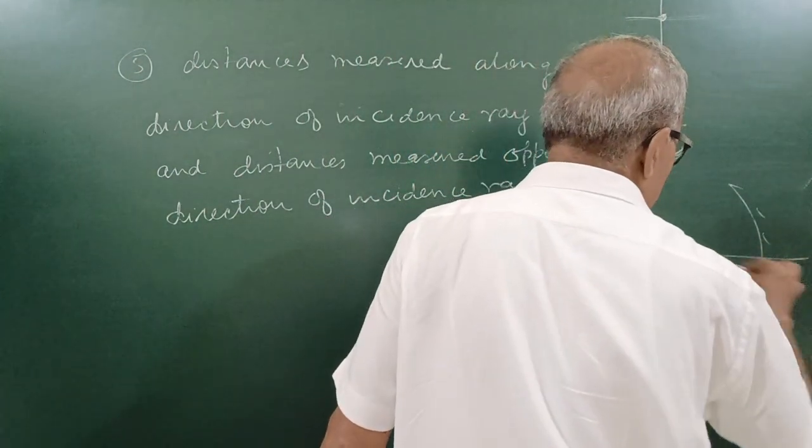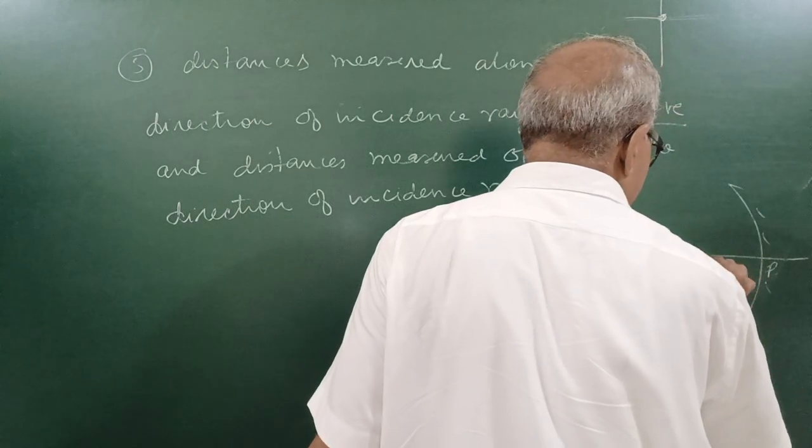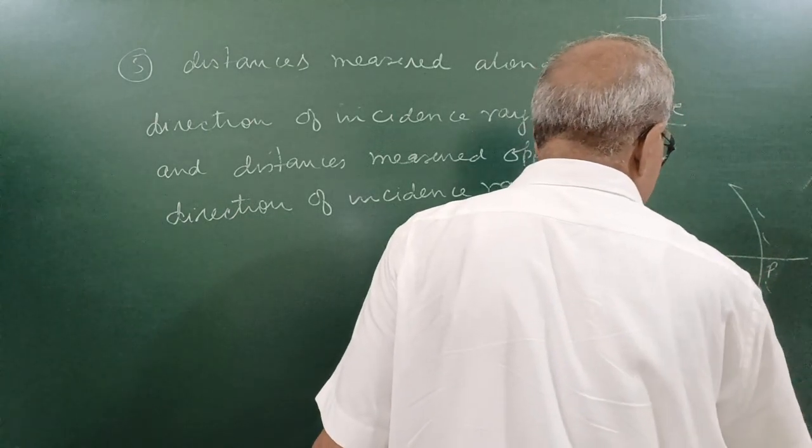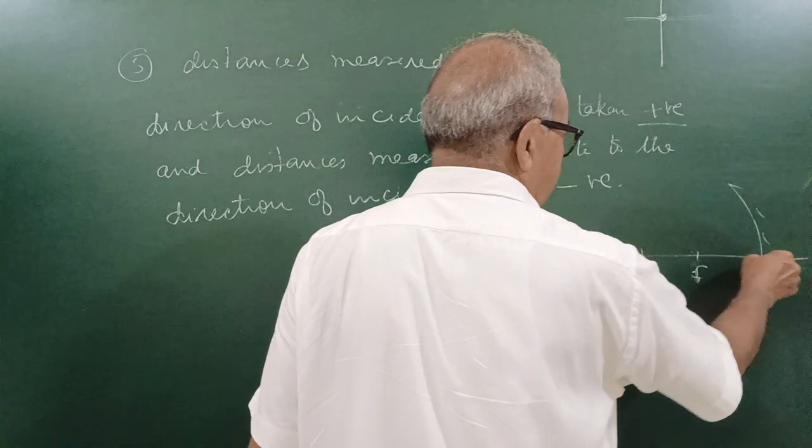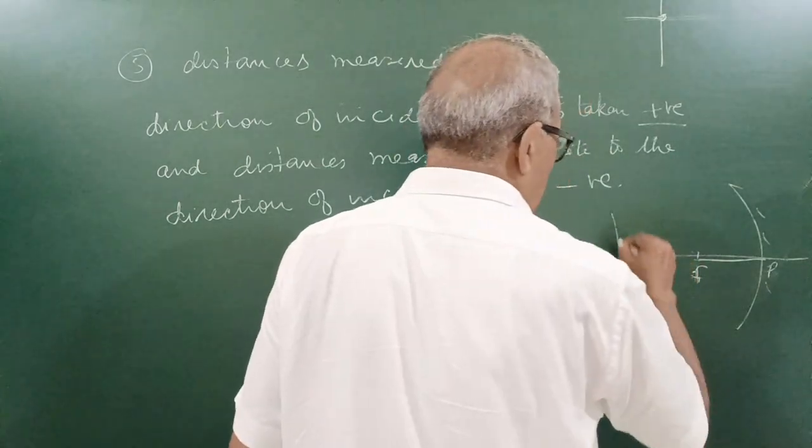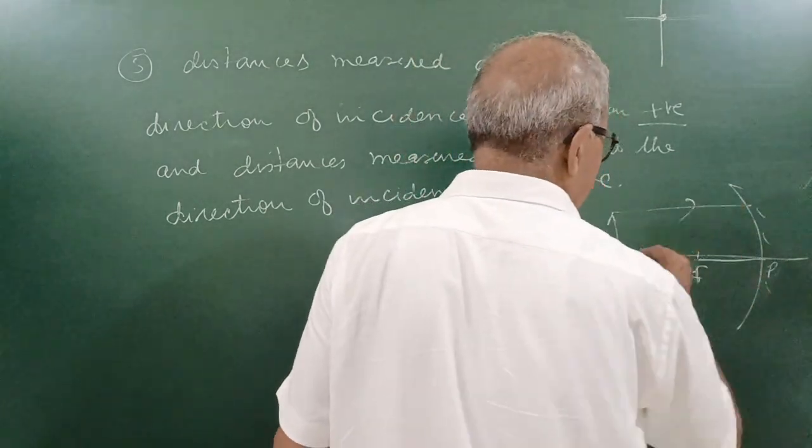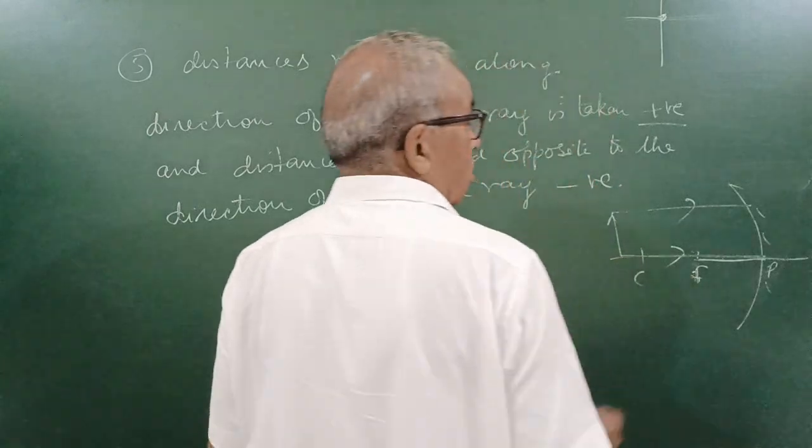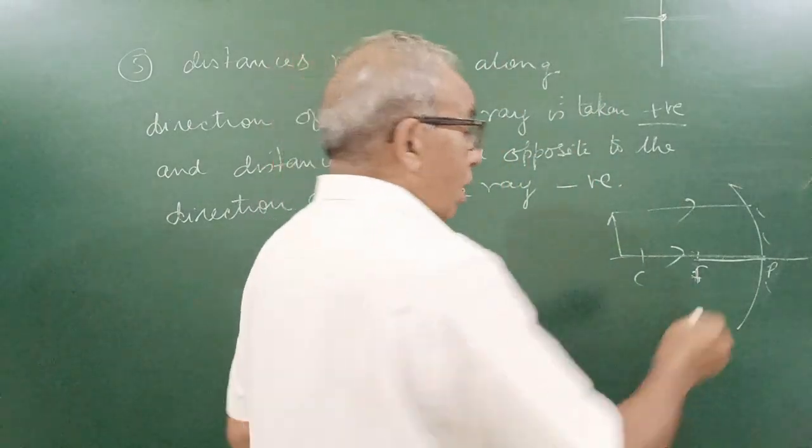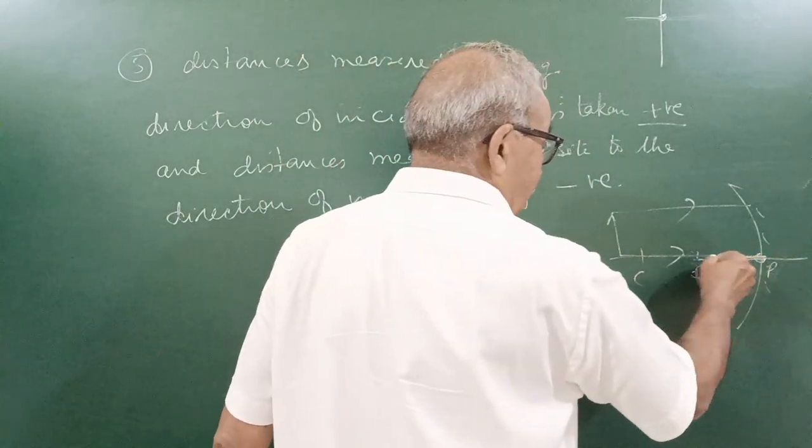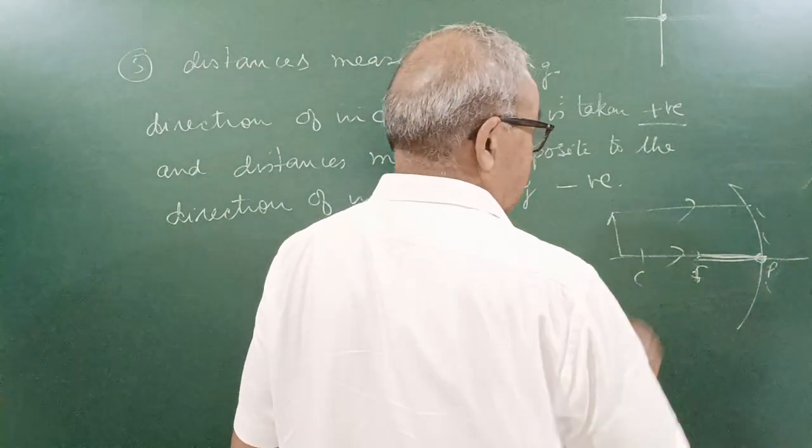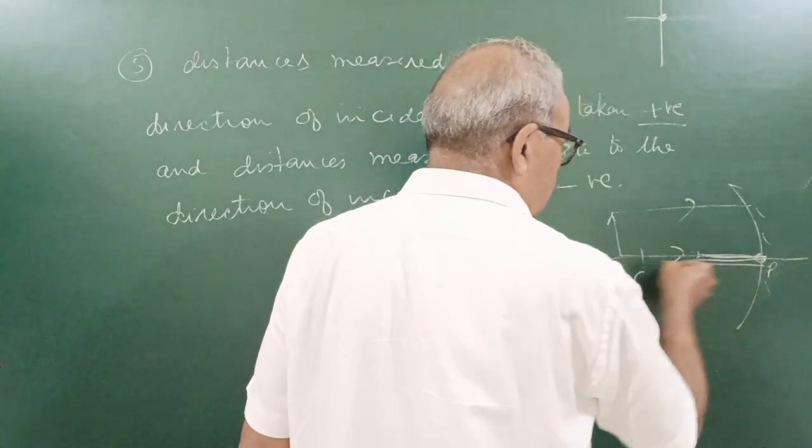It is the mirror here, it is the pole it is C here, it is F, focal length F it is C, so F negative, before objective place somewhere like this, they come like this, so distances are measured from pole to the other negative, negative negative.